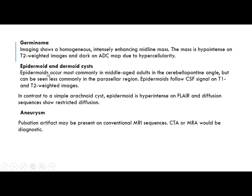Epidermoid and dermoid cysts: epidermoid occurs most commonly in middle-aged adults and in the cerebellopontine angle but can also be seen in the parasellar region. Epidermoid follows CSF signal on T1 and T2, but in contrast to simple arachnoid cysts, epidermoid is hyper-intense on FLAIR and diffusion sequences due to restricted diffusion. Aneurysm: pulsation artifact may be present on conventional MRI, and definitive diagnosis is by CT angiography or MR angiography.